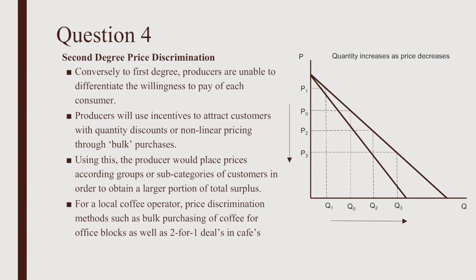Second degree price discrimination: conversely to first degree, producers are unable to differentiate between the willingness to pay of each customer. Producers will use incentives such as quantity discounts or non-linear pricing through bulk purchases, placing prices according to groups or subcategories of customers to obtain a larger portion of total surplus. For a local coffee operator, this could include bulk purchasing of coffee for office blocks, as well as two-for-one deals in cafes.